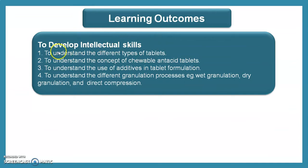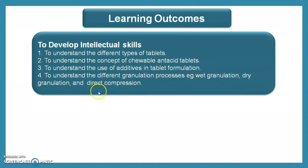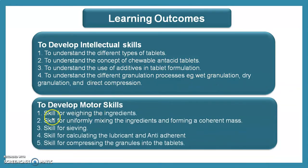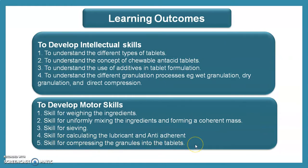Learning outcomes of today's session: after watching this video, students are able to develop intellectual skills such as understanding the different types of tablets, the concept of chewable antacid tablets, the additives in tablet formulation, and the different granulation processes — wet granulation, dry granulation, and direct compression. Motor skills include weighing, uniform mixing of ingredients, forming a coherent mass, sieving, calculating lubricant and anti-adherent, and compressing granules into tablets.